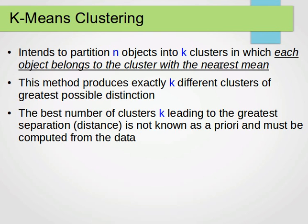This method produces exactly k different clusters of greatest possible distinction. So we have n points or n objects and we partition them into k clusters. Each object belongs to the cluster with the nearest mean, and the method produces exactly k different clusters of greatest possible distinction.